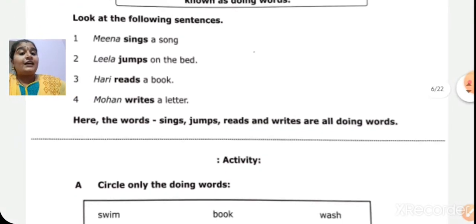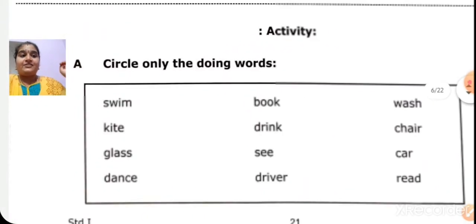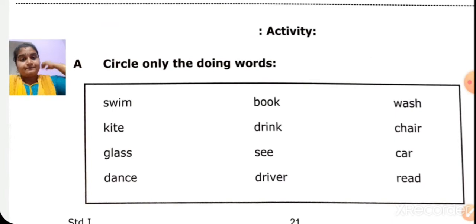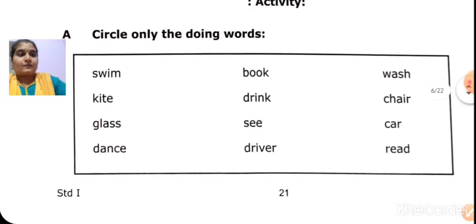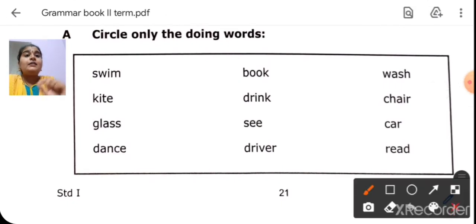So, now we are going to do an activity. Can we do it? Take out your pencil. This is a doing word. Only the doing words. Circle. Only the doing words. So, first one. Swim. Is swim a doing word? Yes. It is an action. Kite. No. It is an object. Glass. It is an object. Dance. Dance is an action that we are doing. So, it is a doing word.